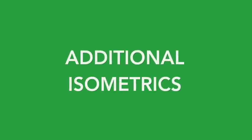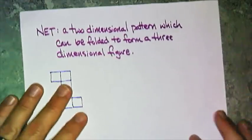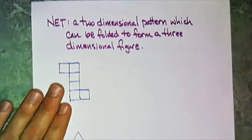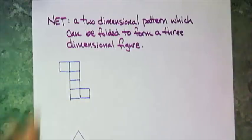In this lesson, we continue with drawing some isometrics. These are the isometrics that we did not cover last time. But before I get to the isometrics, I need a new vocabulary term, and that vocabulary term is a net. A net is a two-dimensional pattern which can be folded to form a three-dimensional figure.